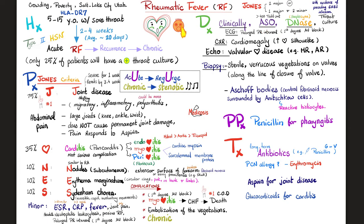Anti-ASO and anti-DNASB antibodies tell me about group A beta-hemolytic streptococci. Chest X-ray shows cardiomegaly or enlarged cardiac silhouette; echo shows valvular heart disease — acute is regurgitant, chronic is stenotic. Post-mortem biopsy or autopsy will show Aschoff bodies: fibrinoid necrosis surrounded by Anitschkow cells, which are reactive histiocytes or reactive macrophages. How do I prevent rheumatic fever? Nip it in the bud.